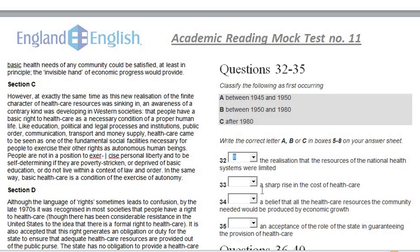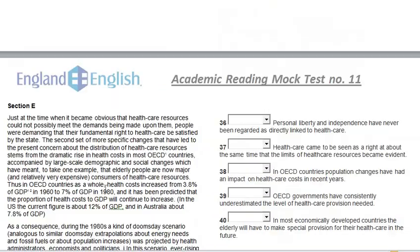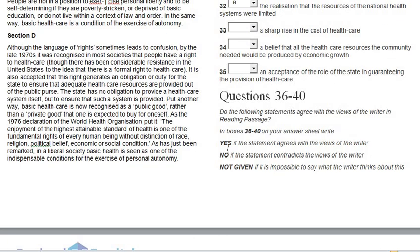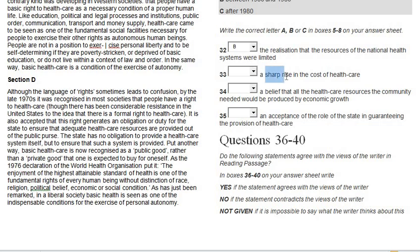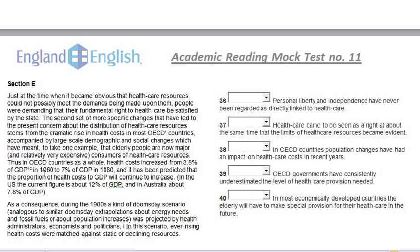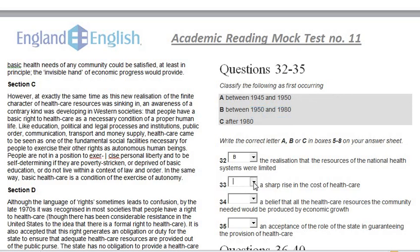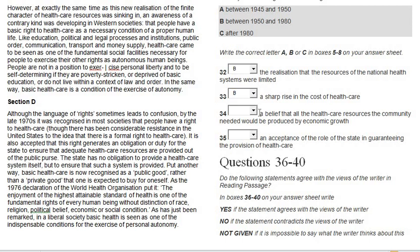Question 33: 'A sharp rise in the cost of healthcare.' Section E states: 'In OECD countries as a whole, health cost increased from 3.8% of GDP in 1960 to 7.8% of GDP in 1980.' Cost increased is the same as a sharp rise in costs, and this happened between 1960 and 1980, which falls under option B (1950–1980). Answer: B.